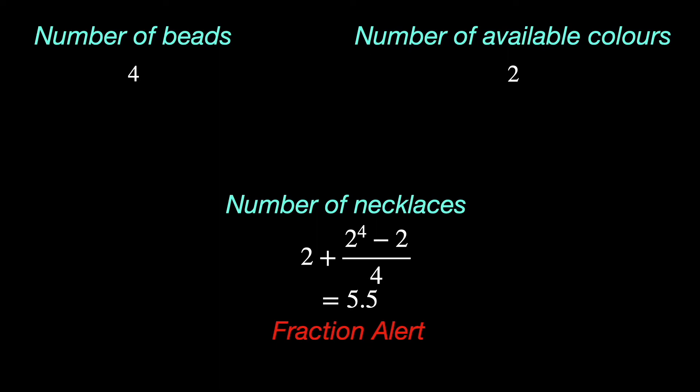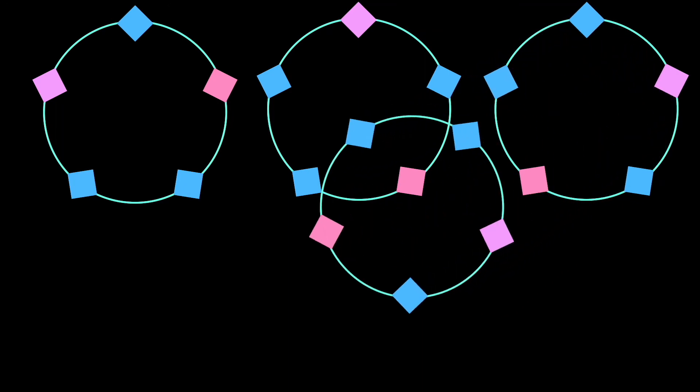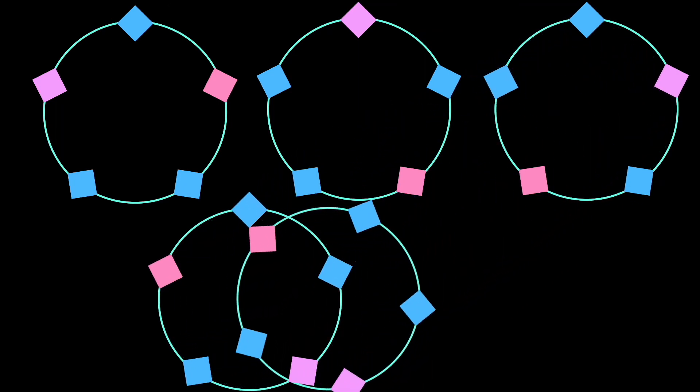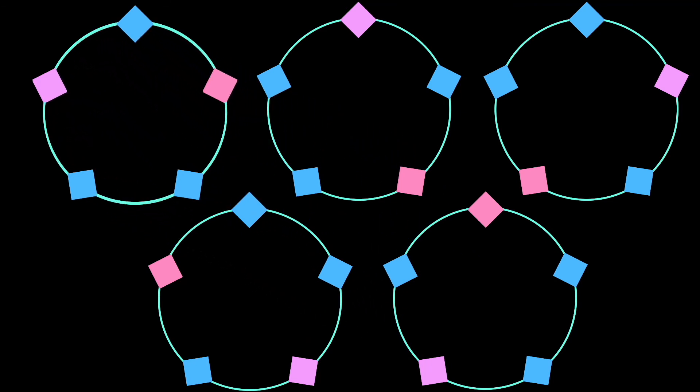To understand what we did wrong, we must rethink why we are dividing by four. Earlier, with five beads, we had seen that either a necklace is monochromatic or each of the five rotations lead to apparently different colorings. And so we divided by five to obtain the true number.